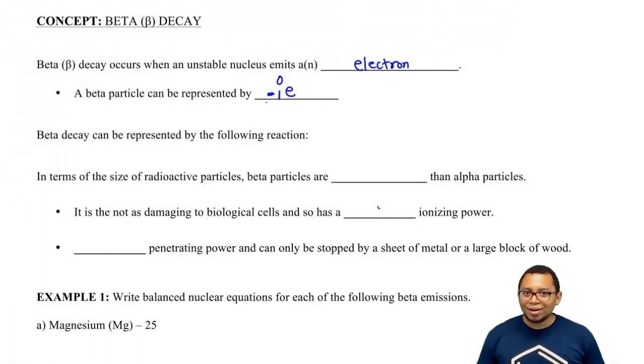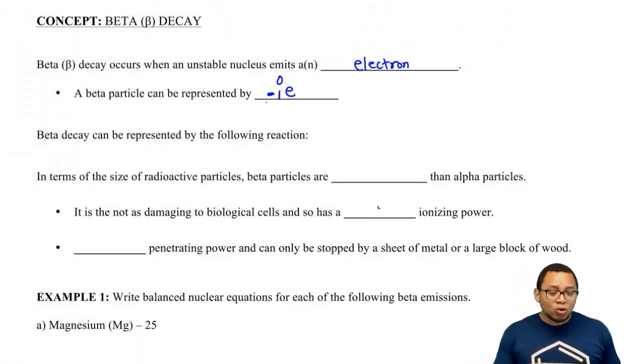Because your atomic number is basically the number of protons. Since this is an electron, we're going to say that it's the opposite of a proton, which is 1. So an electron is negative 1.